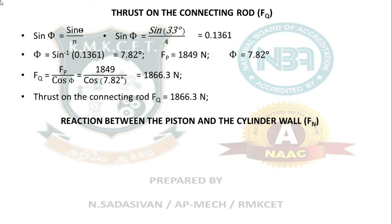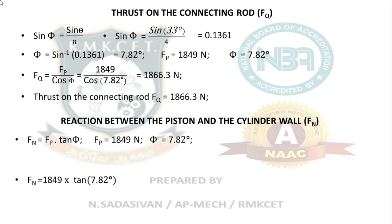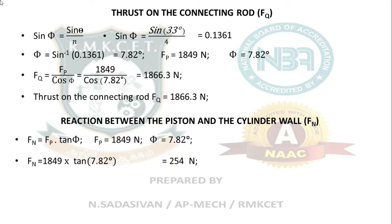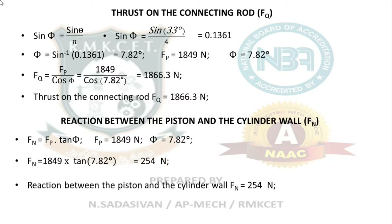Reaction between the piston and cylinder walls, Fn, equals FP times tan φ. FP is 1849 Newton and phi is 7.82 degrees. So Fn equals 1849 times tan(7.82°), giving the answer as 254 Newton. Reaction between piston and cylinder walls is 254 Newton.